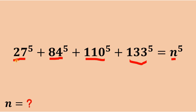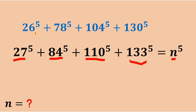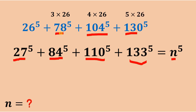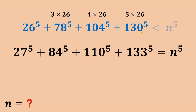First, instead of using 27, 84, 110, 133 raised to the fifth power, we will use 26, 78, 104, and 130 raised to the fifth power as a lower bound. We choose 78, 104, and 130 because 78 is 26 times 3, 104 is 26 times 4, and 130 is 26 times 5. Since 26 is less than 27, 78 is less than 84, 104 is less than 110, and 130 is less than 133, the sum of these numbers is less than n raised to the fifth power.